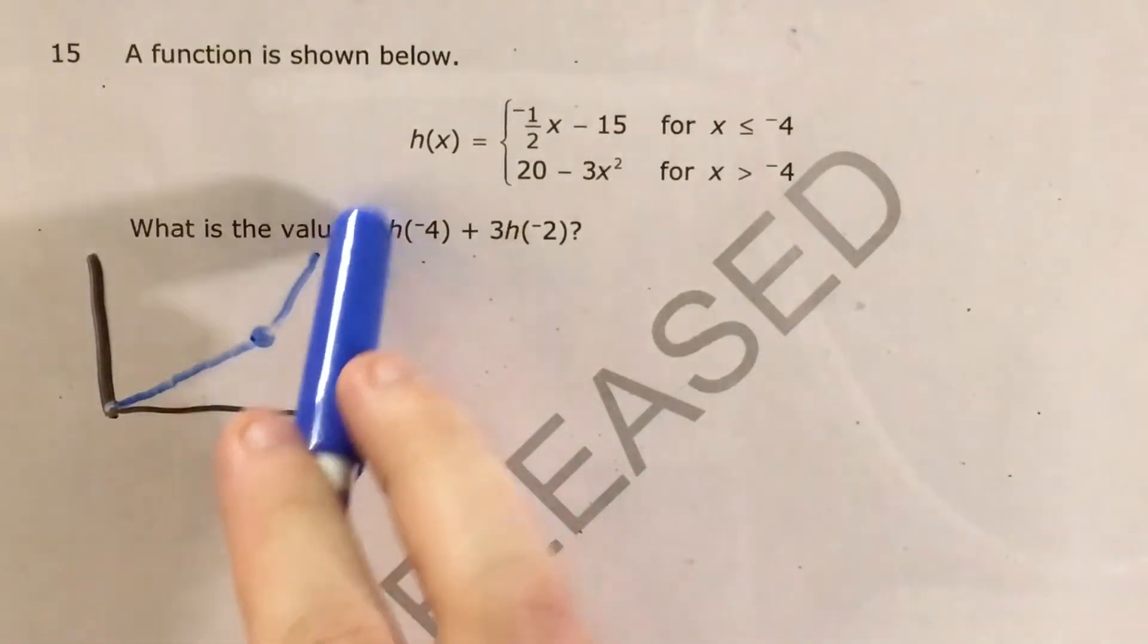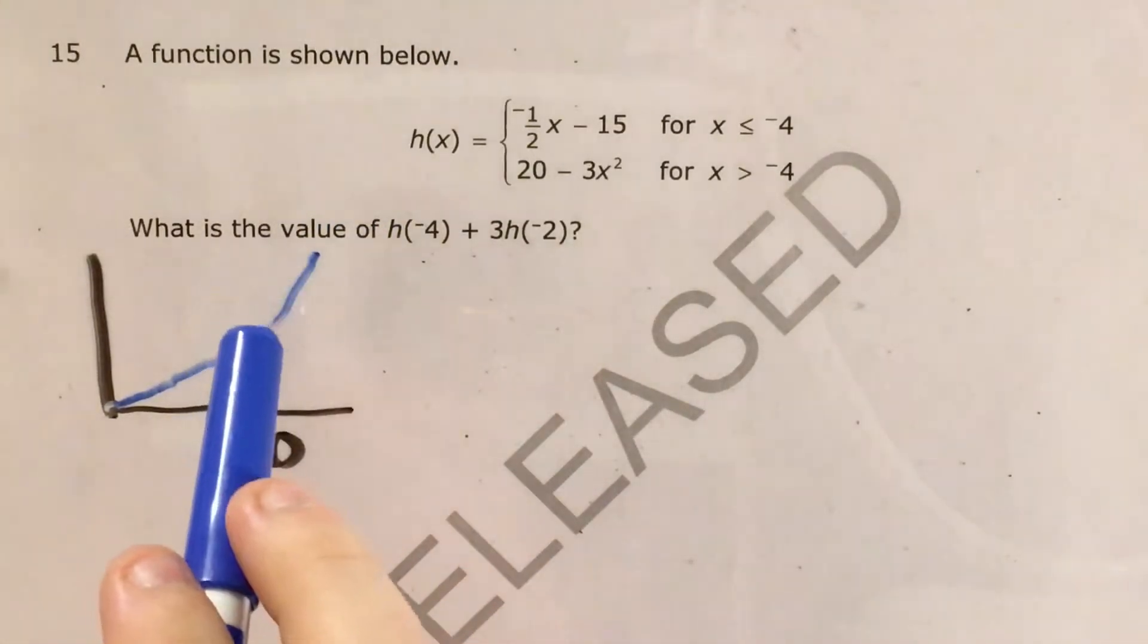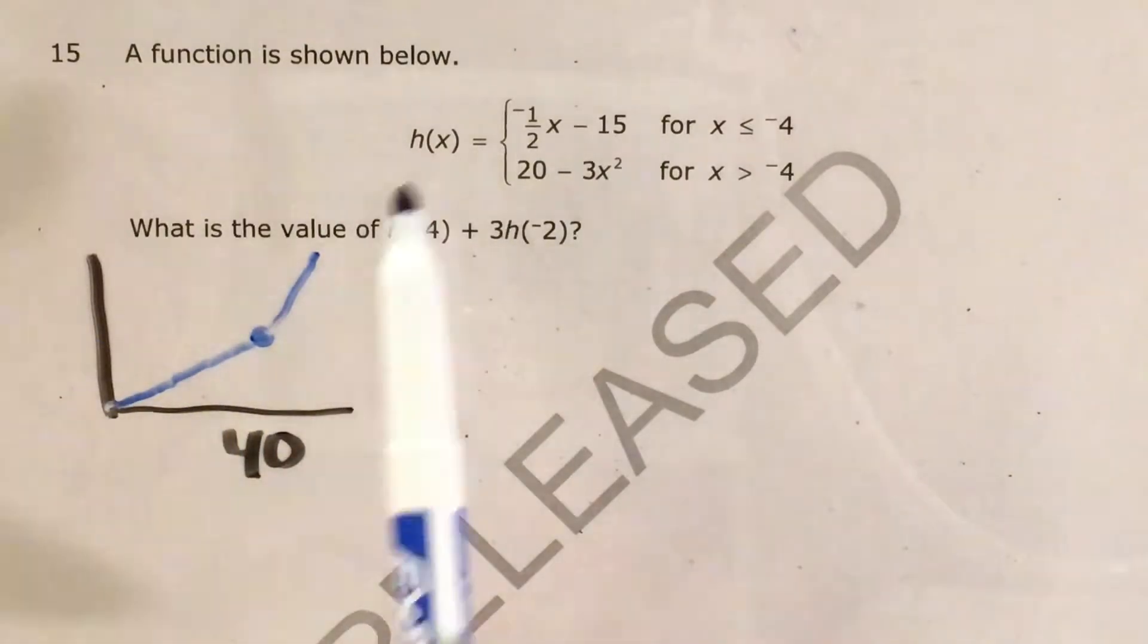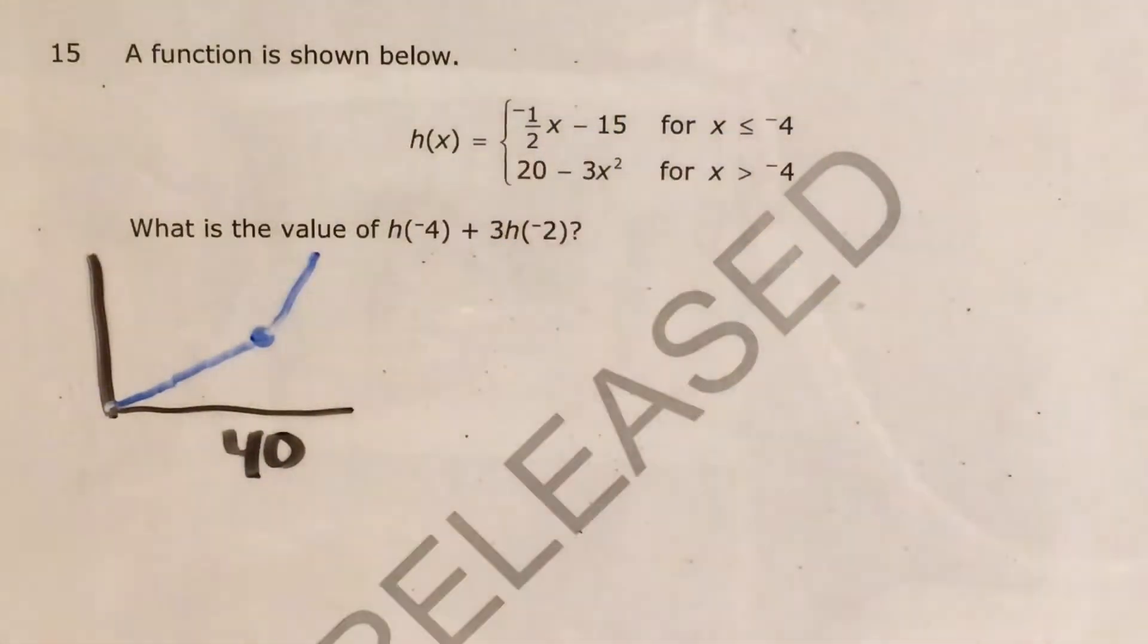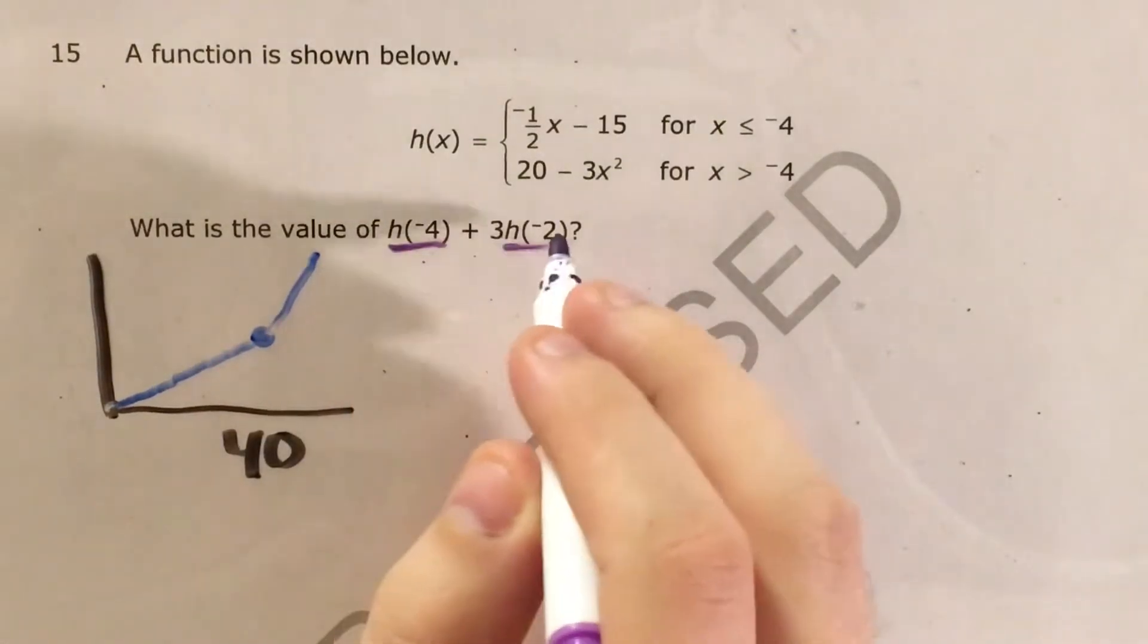And then from 40 hours onward, we have a steeper slope which means we're making more money. And this is the way that you'll see these written. You'll see the range of x's that each part of the function will go with. And then we'll have to look at each value of x that the problem is asking us to plug in and see where it would go.